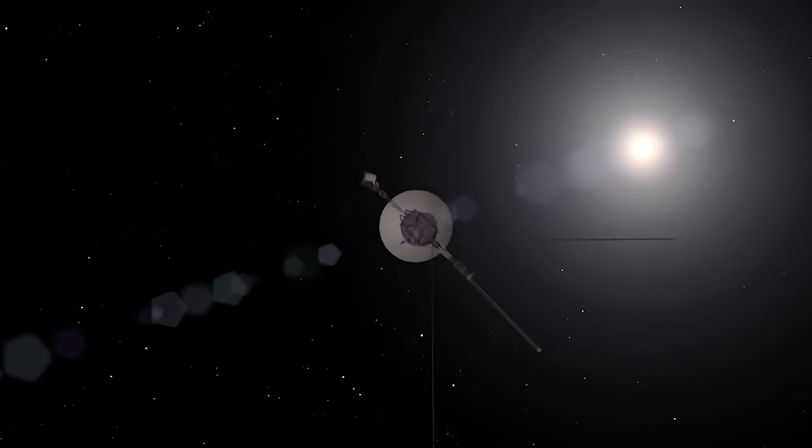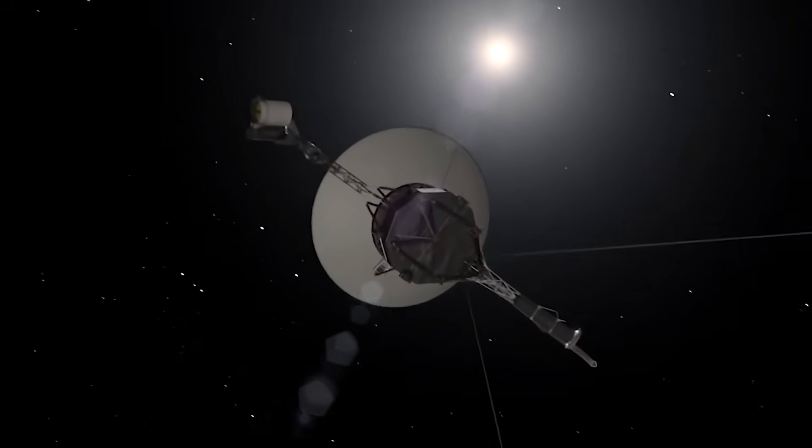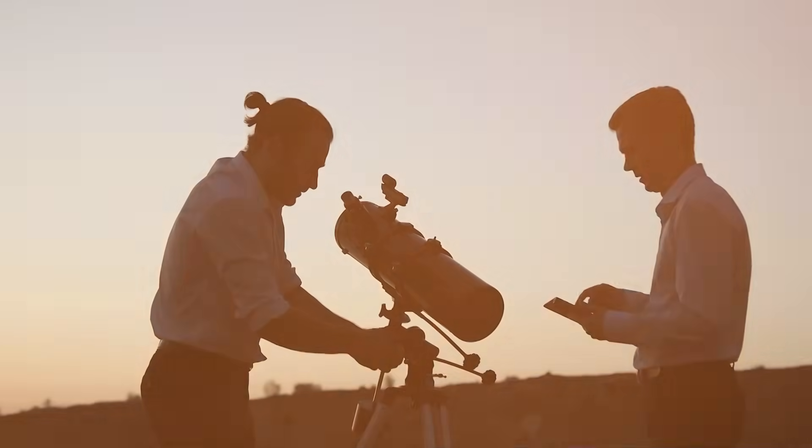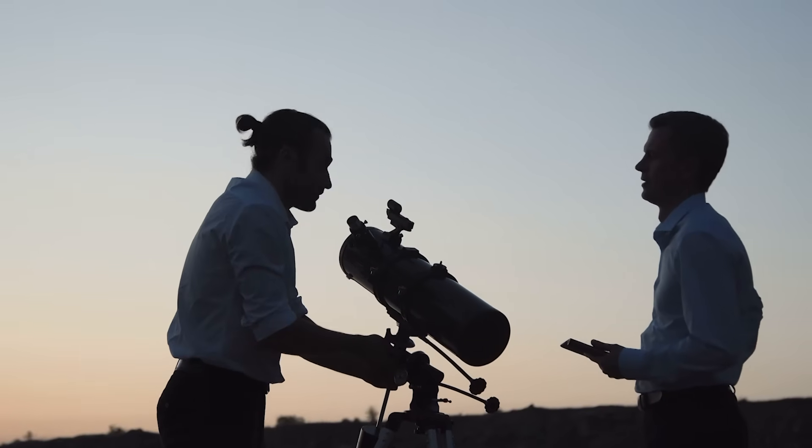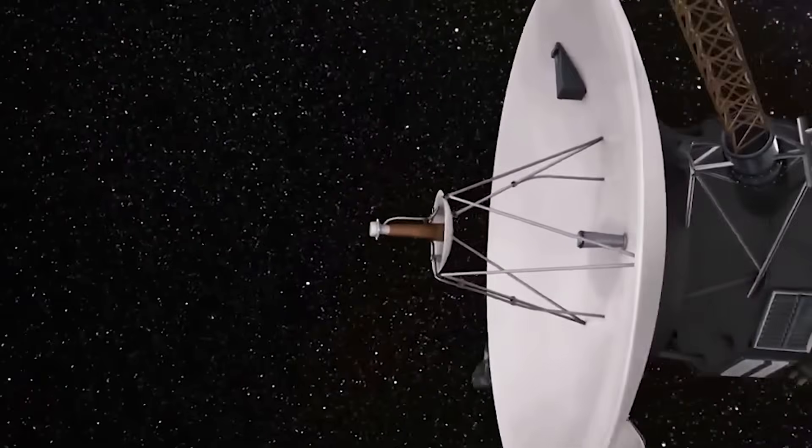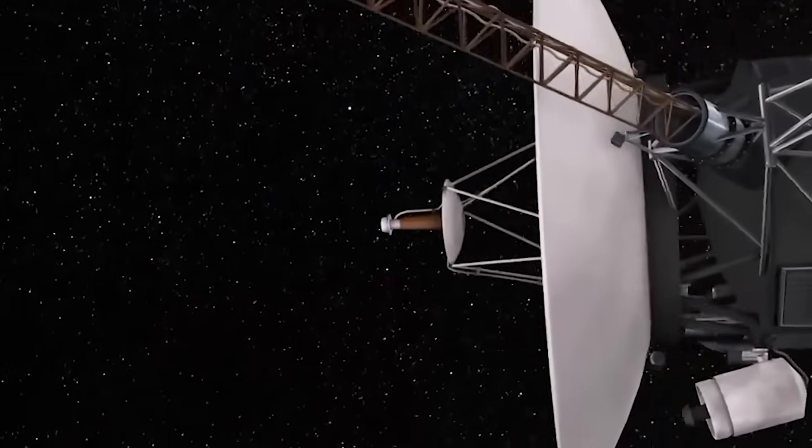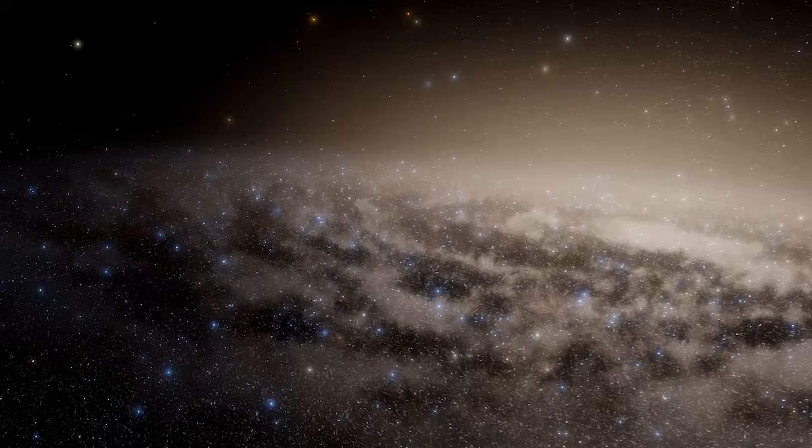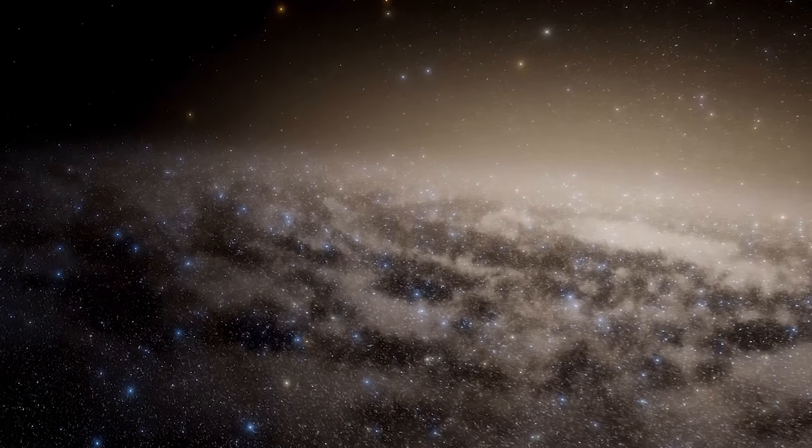Meanwhile, Voyager 1 continued on its trajectory, silent again after the transmission. No further signals were received. Engineers confirmed that the spacecraft's systems had stabilized, but its power reserves were critically low. It might never speak again. And yet, it had already said something profound, something that no human probe had ever said before.